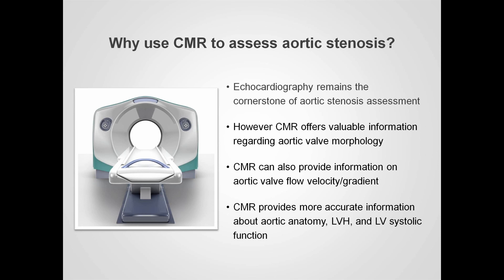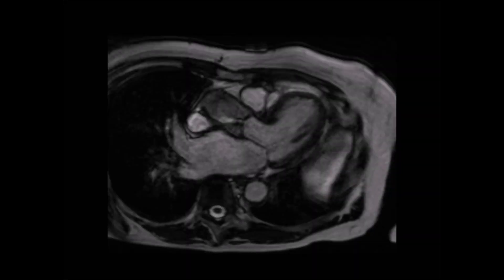So let's take a look at some examples, beginning with the assessment of valve morphology. This is a still frame from a Cine-CMR image — a three-chamber view with the left ventricle, the mitral valve, and the left atrium. We have the left ventricular outflow tract, the aortic valve, and the aortic root. In this view we can inspect the aortic valve cusps, and as in the echocardiographic parasternal long axis view, we have the right coronary cusp and the non-coronary cusp.